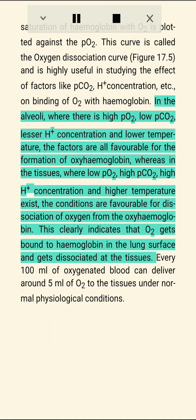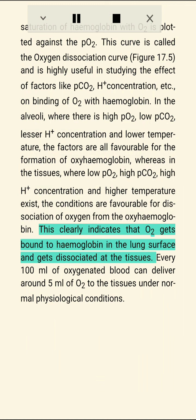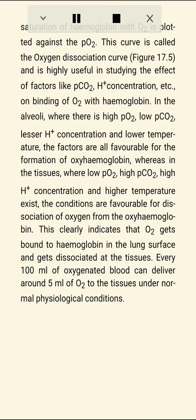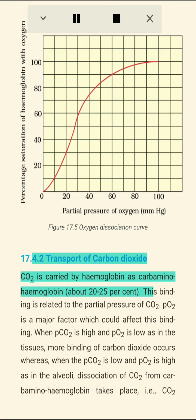In the alveoli, where there is high pO2, low pCO2, lesser H+ concentration, and lower temperature, the factors are favorable for formation of oxyhemoglobin. In the tissues, where low pO2, high pCO2, high H+ concentration, and higher temperature exist, conditions are favorable for dissociation of oxygen from oxyhemoglobin. This indicates that O2 gets bound to hemoglobin in the lungs and dissociates at the tissues. Every 100 mL of oxygenated blood can deliver around 5 mL of O2 to the tissues under normal physiological conditions.